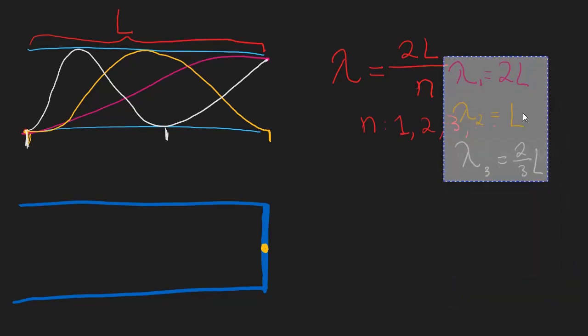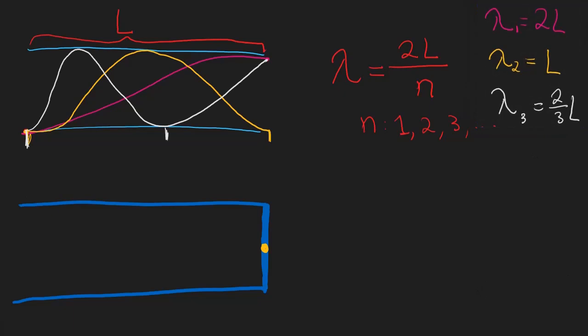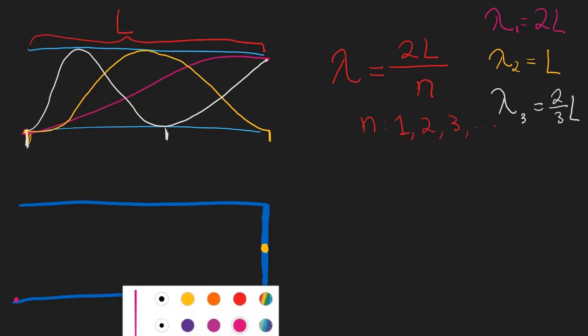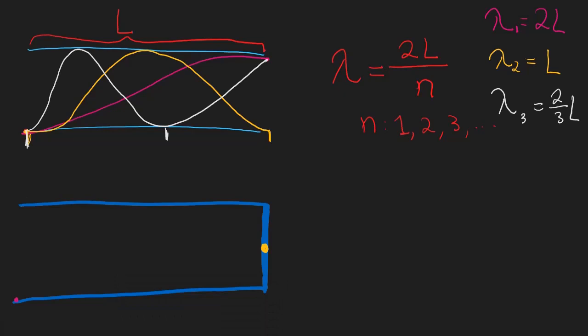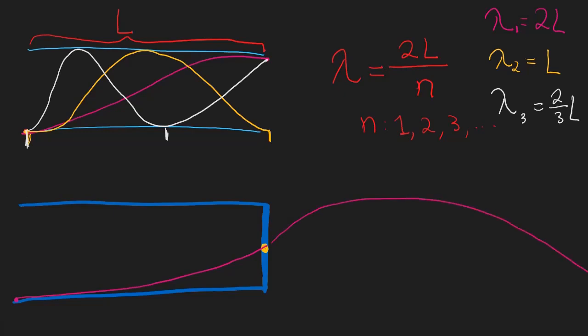Now let's talk about a closed tube. A closed tube is going to have a node at one end and an antinode at the other. For the first harmonic of the closed tube, it has an antinode at one end and a node at the other. It's actually a very small part of a much larger wave, and it fills only a portion of the tube. It starts as an antinode and ends as a node.